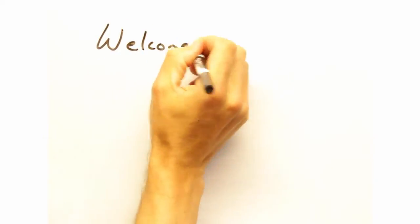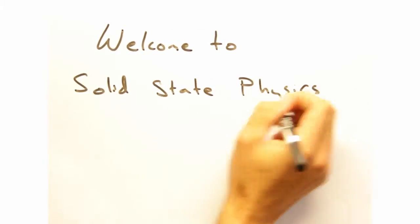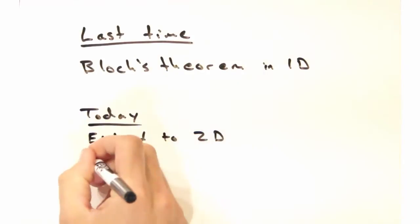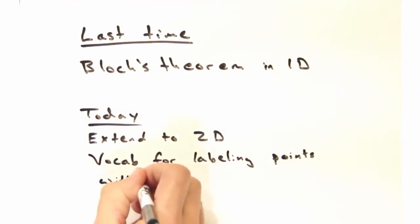Hello everyone, and welcome back to solid state physics in a nutshell, brought to you by the Colorado School of Mines. I'm Eric. And I'm Nicole. Alright, so last time we played with Bloch's Theorem in One Dimension. Today our goal is to extend this to 2D and give you some basic vocabulary for labeling points within the Brillouin zone.